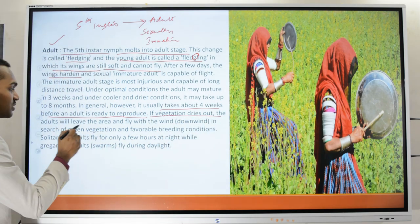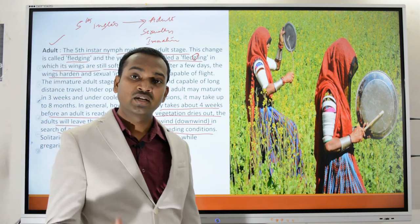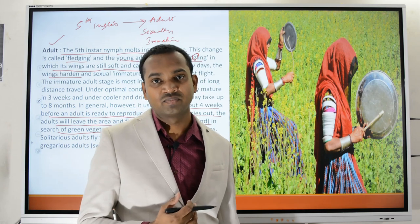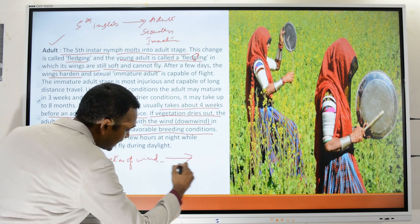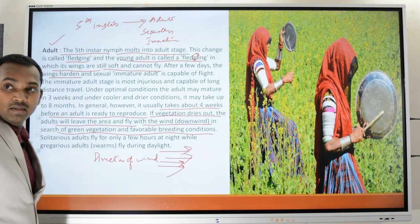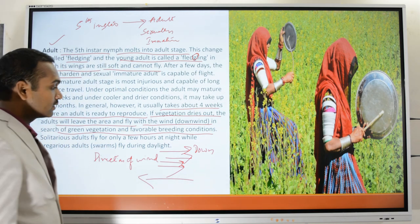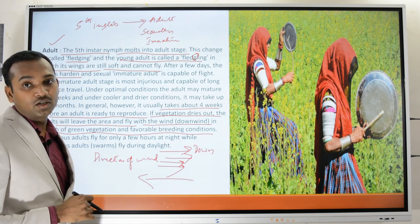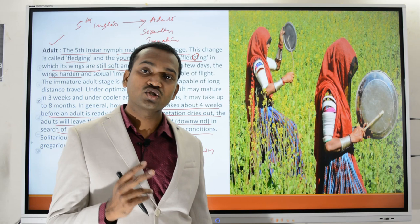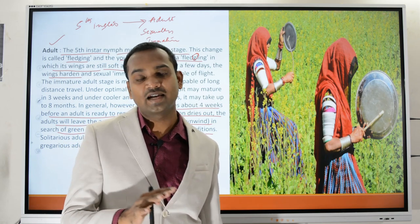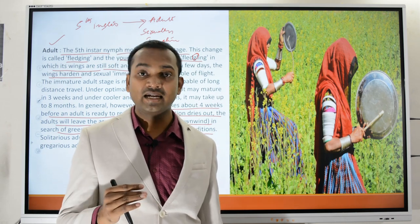If vegetation dries out, adults leave the area and fly downwind in search of green vegetation and favorable breeding conditions. Locusts do not involve in active flight against the wind — they always go downwind, not upwind. Solitary locusts usually travel by night with no fixed schedule, whereas gregarious locusts tend to travel during the daytime and rest at night, requiring large dry areas to rest.